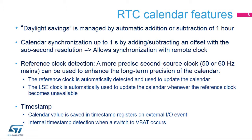This feature is commonly used in RF applications. A reference clock, mains at 50 or 60 Hz, can be used to enhance long-term calendar precision. The reference clock is automatically detected and used to update the calendar when it is present. When the reference clock is not available, the LSE clock is automatically used to update the calendar.